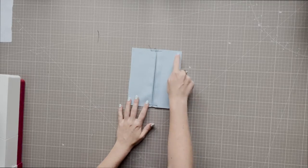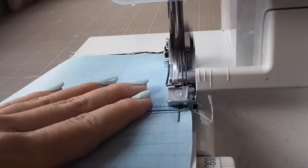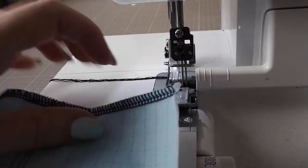Overlock around the pocket completely. If you don't have an overlocker use the zigzag stitch on your regular machine.